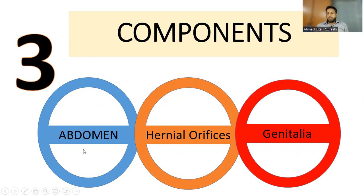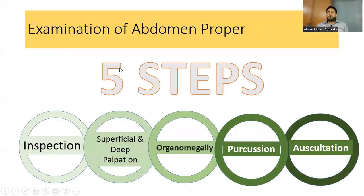The three parts are: examination of the abdomen proper, examination of the hernia orifices, and examination of the genitalia and perineum including per-vaginal and per-rectal examination. Examination of the abdomen proper has five components: inspection, superficial and deep palpation, organomegaly, percussion, and auscultation. Marks would be divided among these five steps.